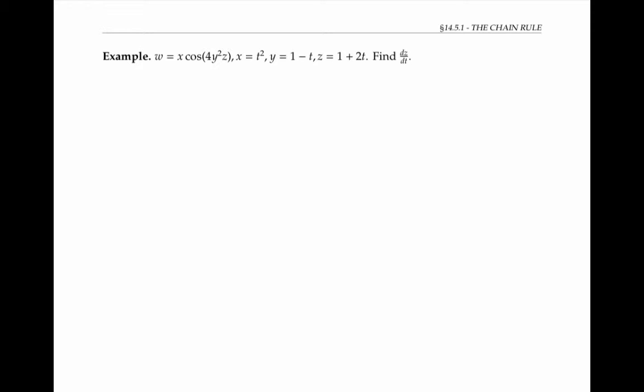Although we've only seen a chain rule for functions of two variables so far, the same thing works for functions of three variables. If we draw a tree diagram with w as a function of x, y, and z, and each of these variables as functions of t, and we write the derivatives on the branches, then we can just multiply down each branch that ends in t and add up our results. Please pause the video and write out the formula for yourself.